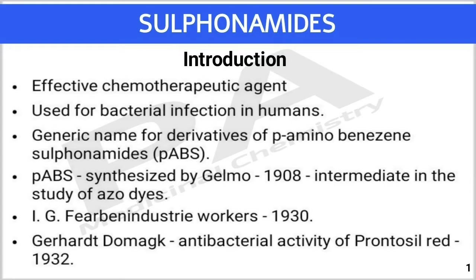Today we are going to see a new chapter called sulfonamides. Sulfonamide is an effective chemotherapeutic agent used for bacterial infection in humans. This term sulfonamide is generally used as a generic name for derivatives of para-amino benzene sulfonamides.